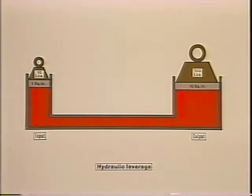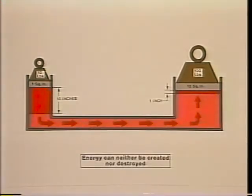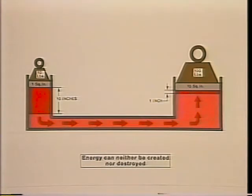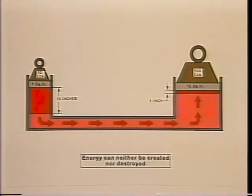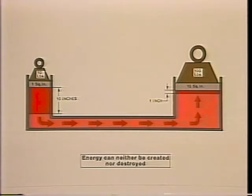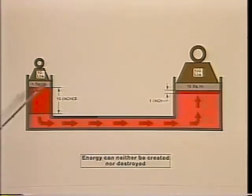A large weight on the bigger piston can be balanced by a smaller weight on the little one. Let's assume an area of 10 square inches on the large piston and only one square inch on the other. Since every action has an equal but opposite reaction, let's place a weight of 100 pounds on the large piston. This will require a force of 100 pounds to support it. This force, spread over the 10 square inch bottom of the piston, will amount to 10 pounds on each square inch, or a pressure of 10 psi on the fluid. According to Pascal, that pressure will be exerting a 10 pound upward force on the one square inch area of the small piston, which can be balanced by a 10 pound weight on its top.